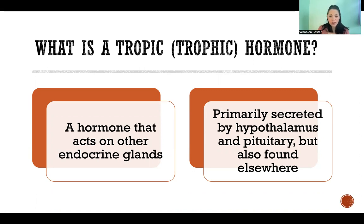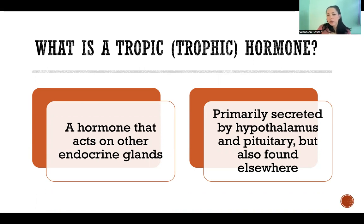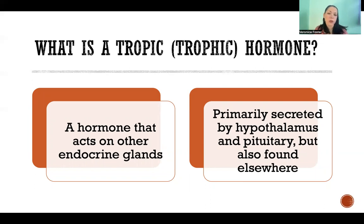and their target is another endocrine gland — and that is a tropic hormone. Most of them are secreted by the hypothalamus or the anterior pituitary gland, but there are actually some that are secreted elsewhere in the body, so I'll touch on a few of those also.